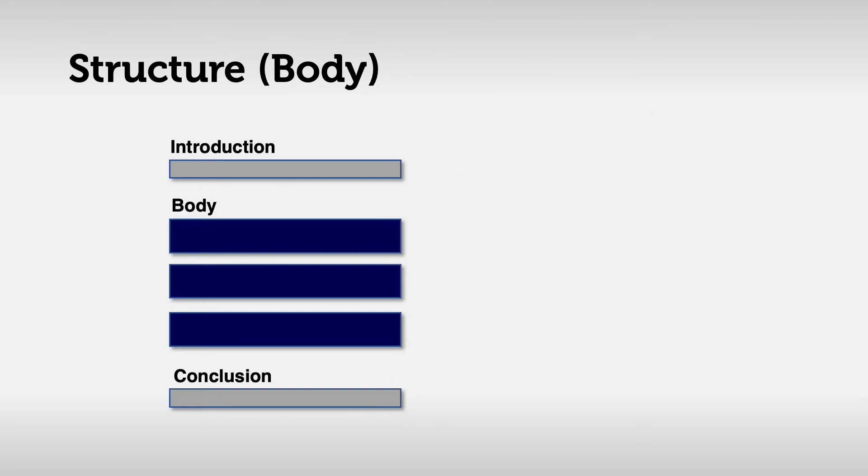Now we get to the body paragraphs, where the topic of the talk will be addressed. It is best to limit this to three to four ideas, so as not to overwhelm your audience. Too many ideas will make your talk sound like a shopping list. It's better to have fewer ideas and cover them in greater depth.